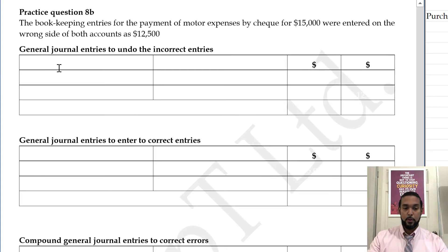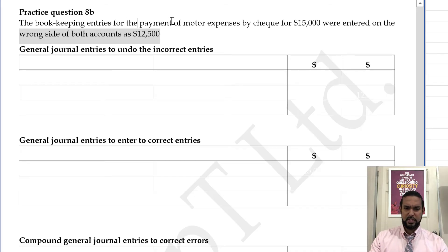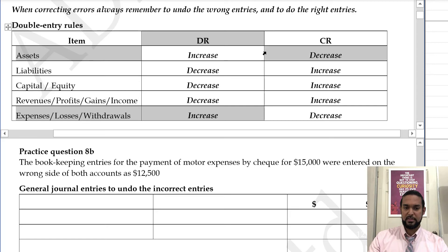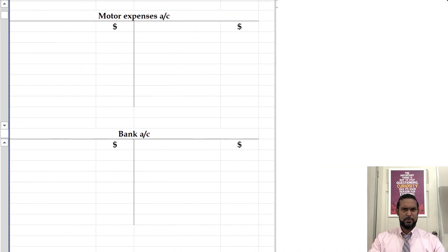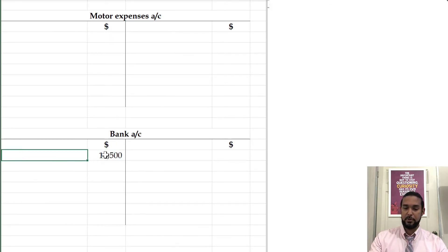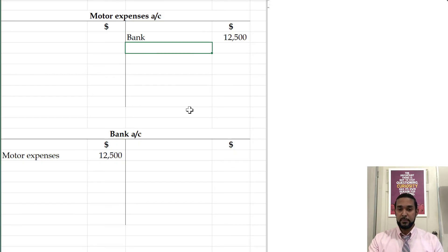Let's take a look at a second example. The bookkeeping entries for the payment of motor expenses by check, 15,000, were entered on the wrong side of both accounts for 12,500. So payment of motor expenses by check — motor expenses is an expense; it's increasing, so you're supposed to debit the motor expenses account. The asset of bank was decreasing because it was paid by check, so that decreases with a credit. So you were supposed to debit motor expenses and credit bank, but we didn't. Going to the T accounts — motor expenses was credited 12,500 and bank was debited motor expenses 12,500, but it was supposed to be 15,000.